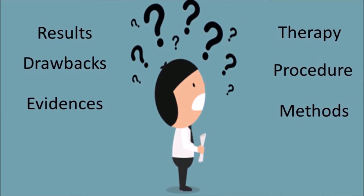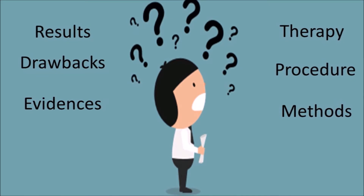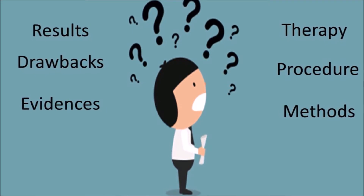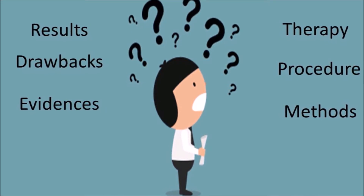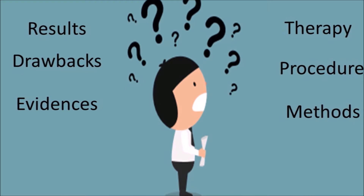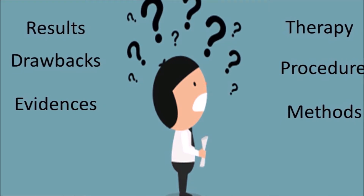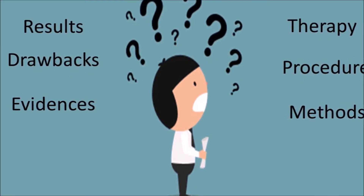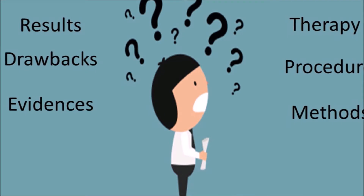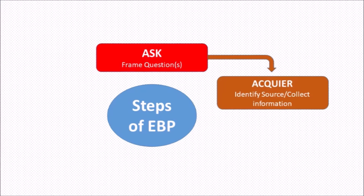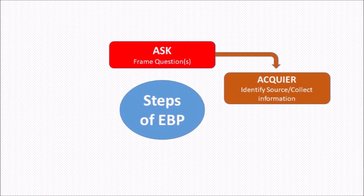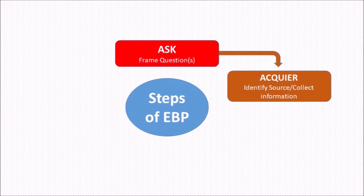For example: What are the methods used to apply in the therapy or procedure? What are the results of that therapy? What are the drawbacks of that therapy? Once you formulate the question, then you go for the second step, i.e., Acquire.